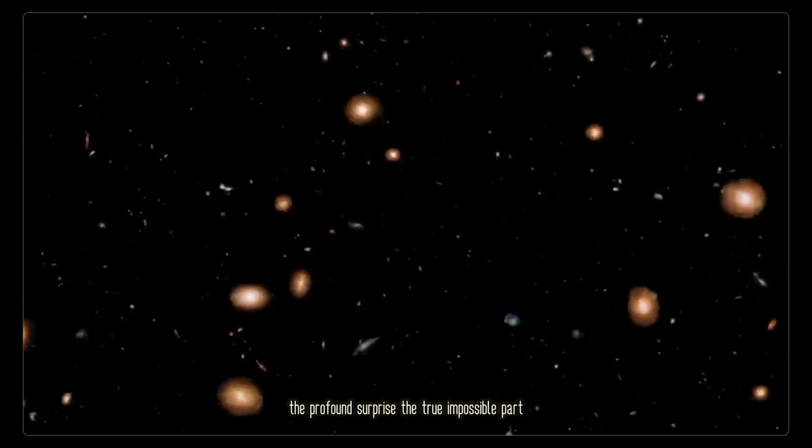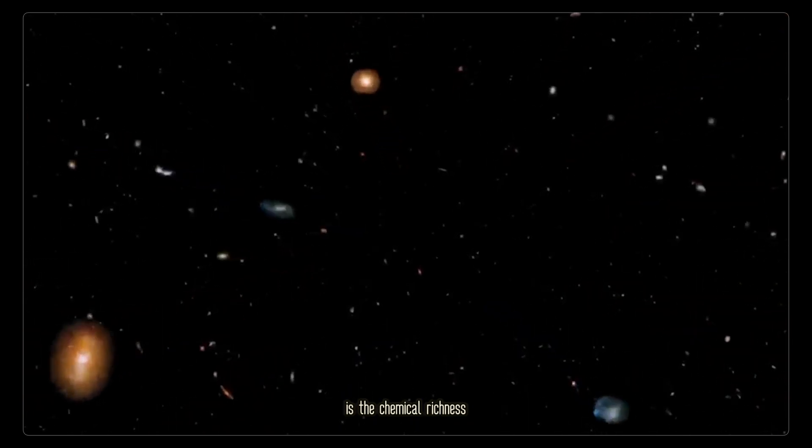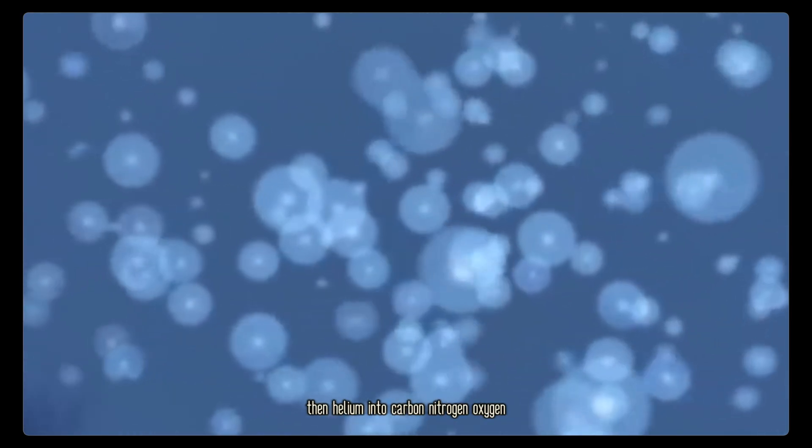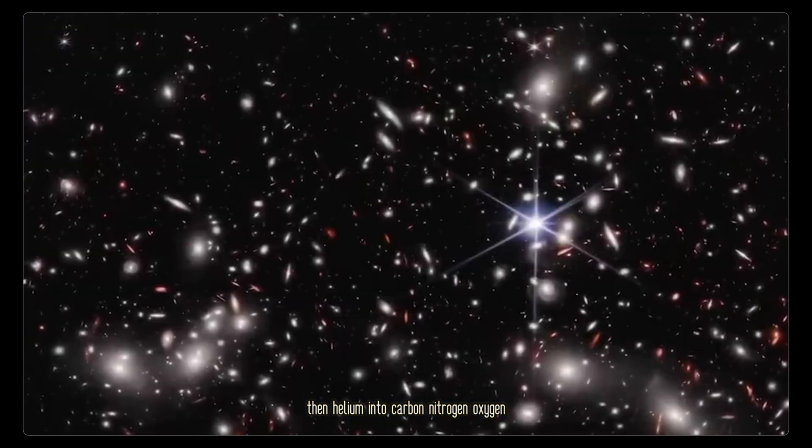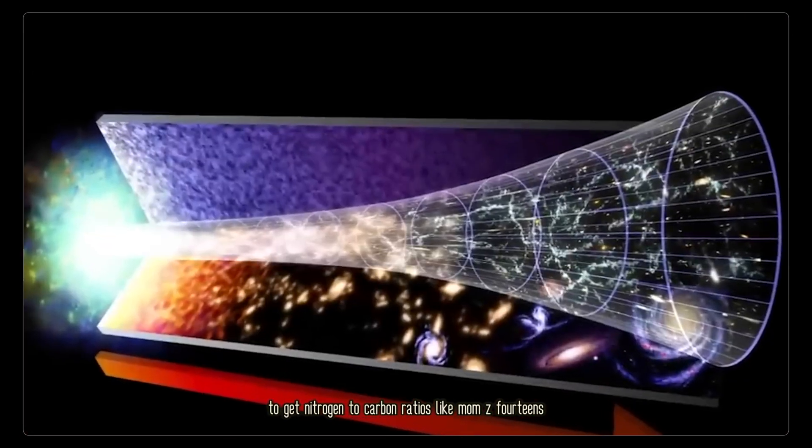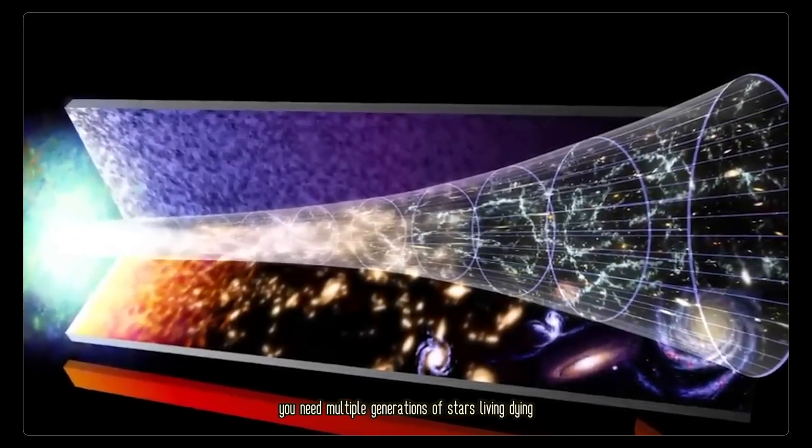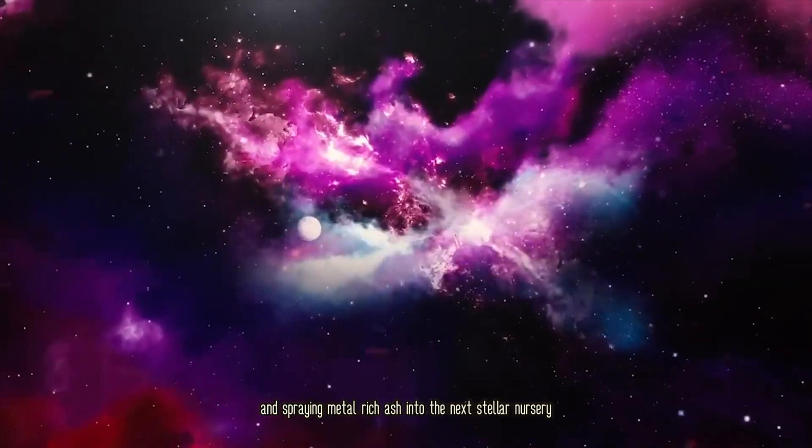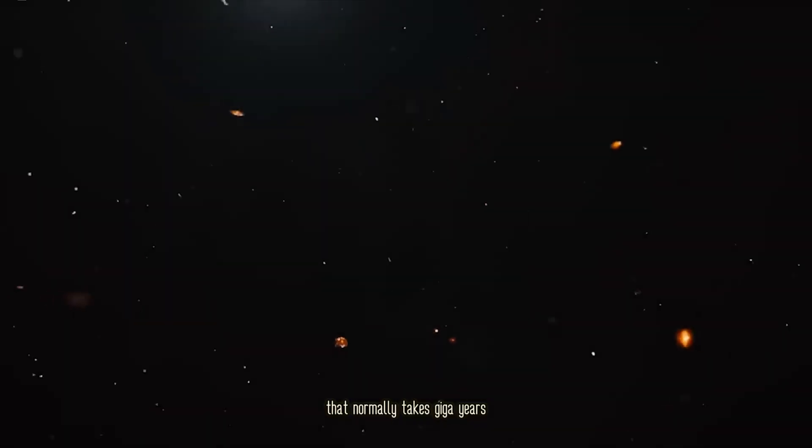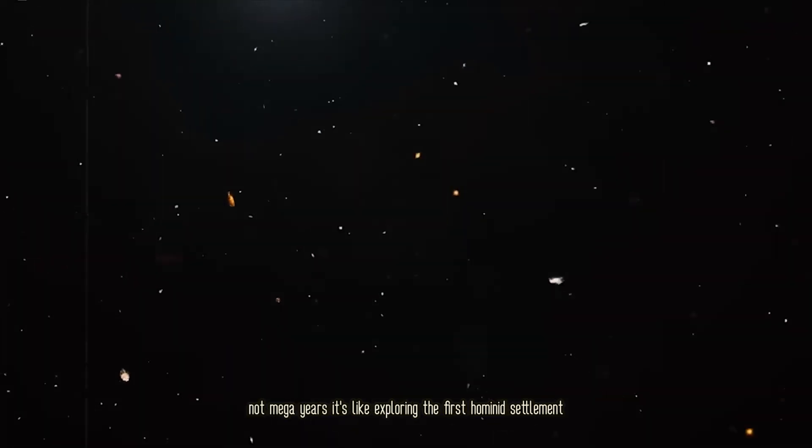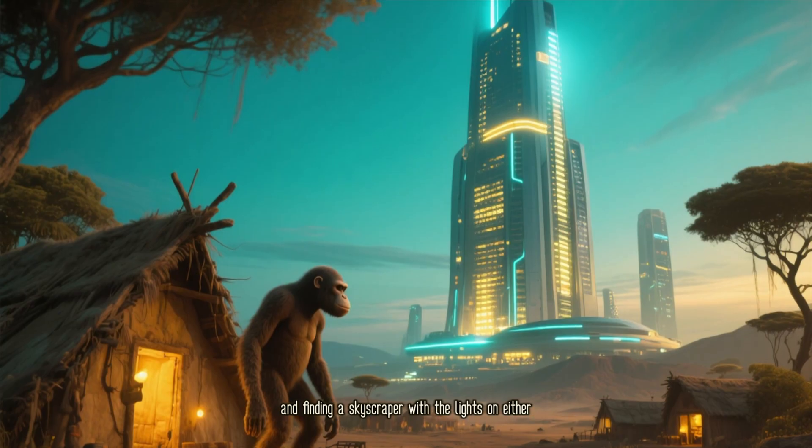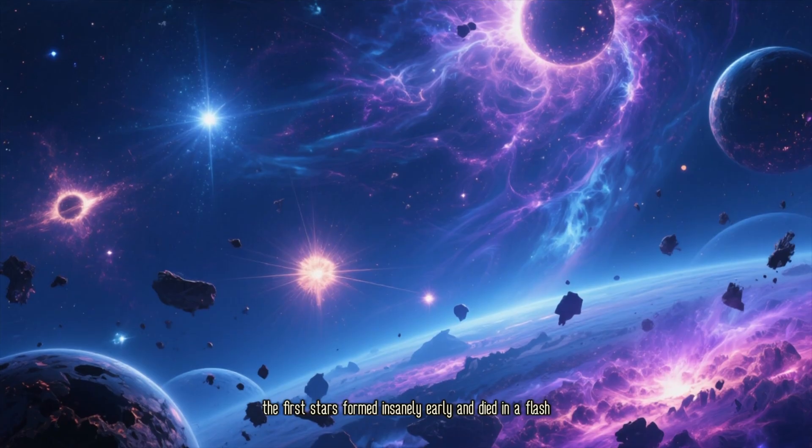The profound surprise, the true impossible part, is the chemical richness. Stars fuse hydrogen into helium, then helium into carbon, nitrogen, oxygen. To get nitrogen-to-carbon ratios like MOMO-Z14's, you need multiple generations of stars living, dying, and spraying metal-rich ash into the next stellar nursery. That normally takes giga-years, not mega-years. It's like exploring the first hominid settlement and finding a skyscraper with the lights on.